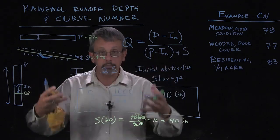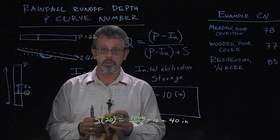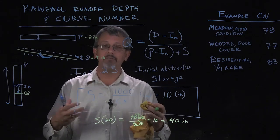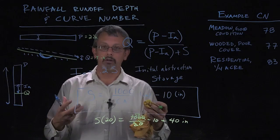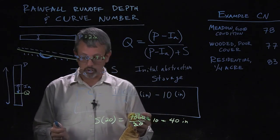Almost all of it is going to seep in. So that curve number is extremely low and probably not very likely for most of the things we're going to use. But you can see that this idea gives you a sense of how much rain can fall before we have any level of runoff once we've established this storage value.